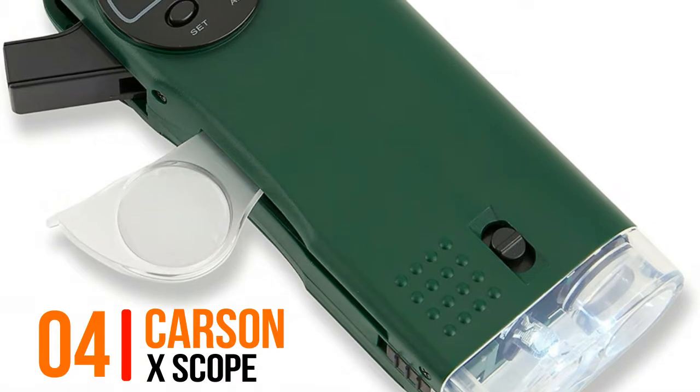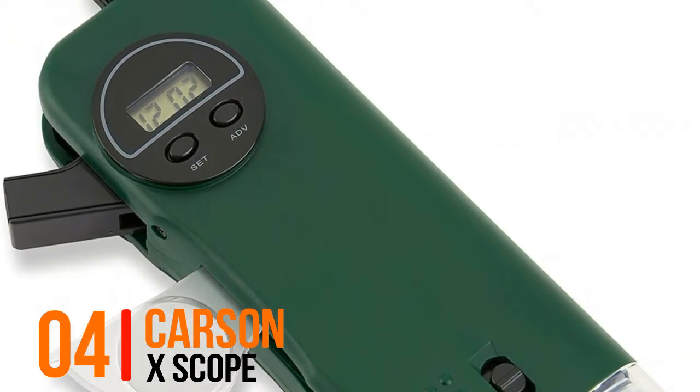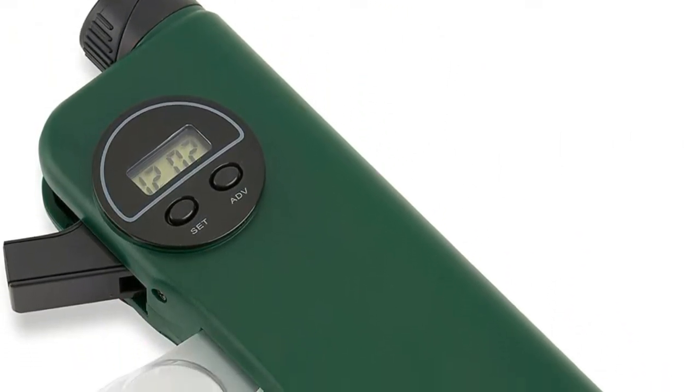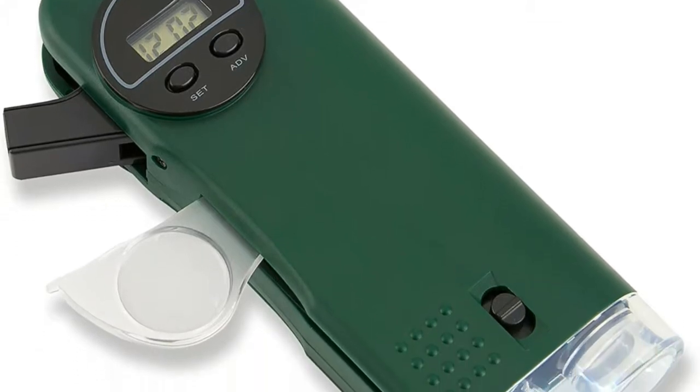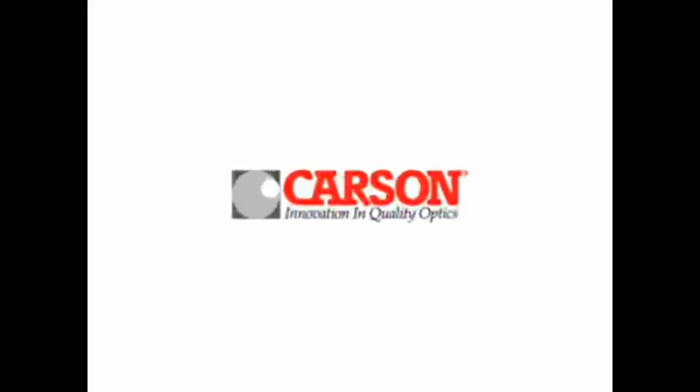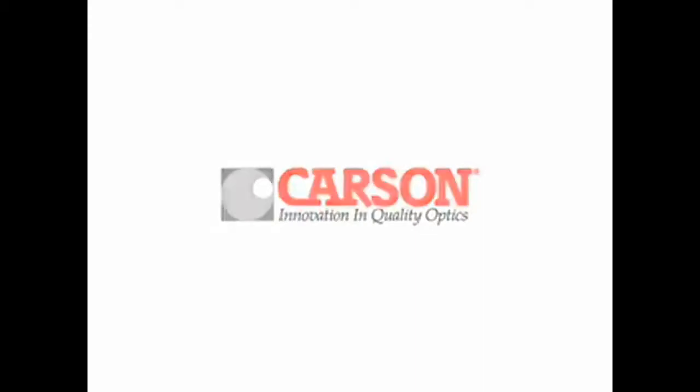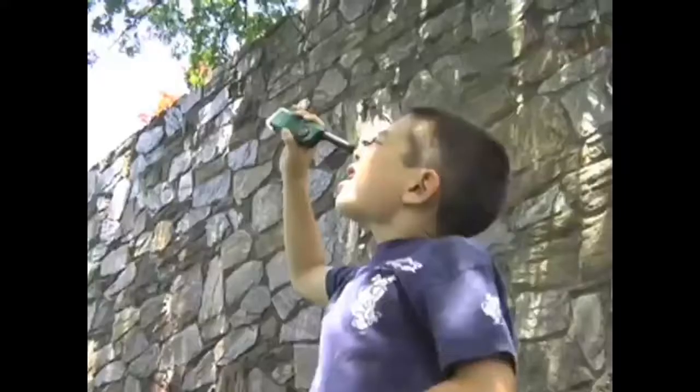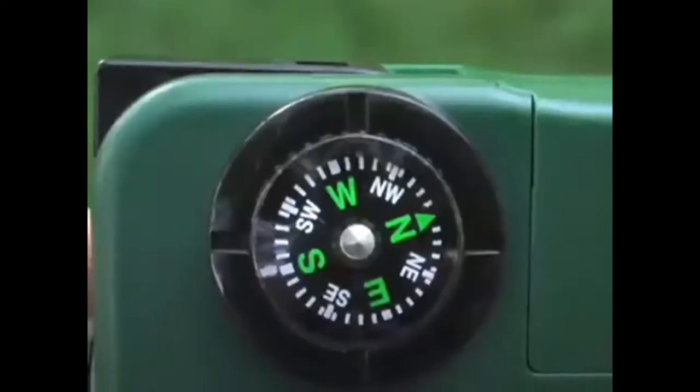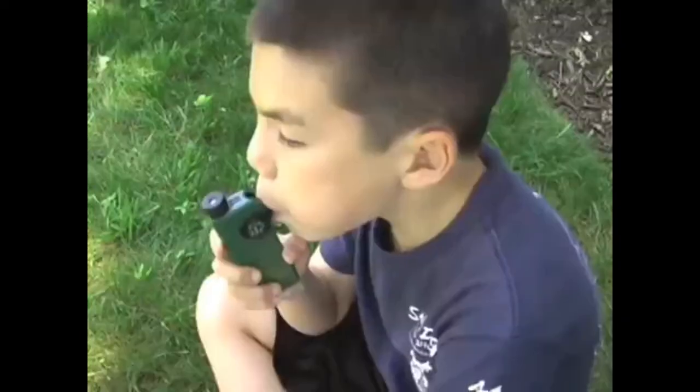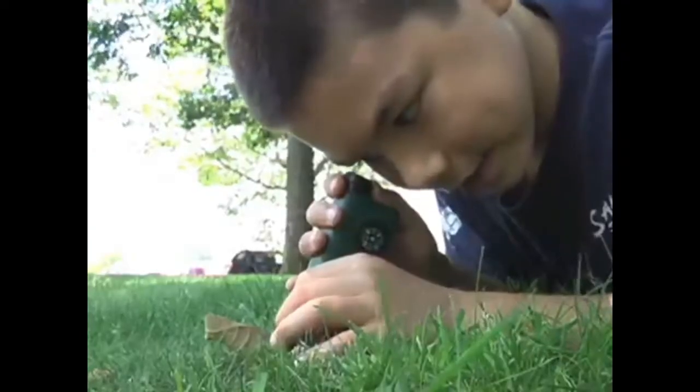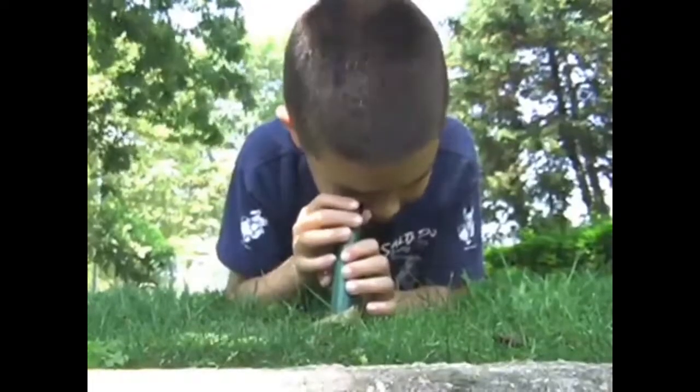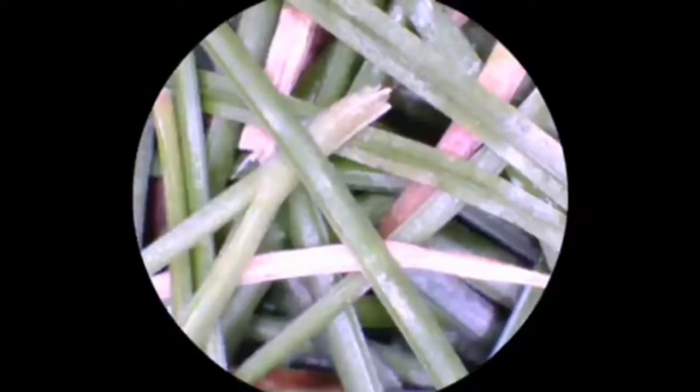Number 4, Carson X scope. If you want to get your kids outside then have we got the toy for you. Introducing Carson's X scope. This toy features seven different awesome features that are great for any child's entertainment. First, it's a 30 power microscope with a focusing ring so your kids can view even the smallest details.